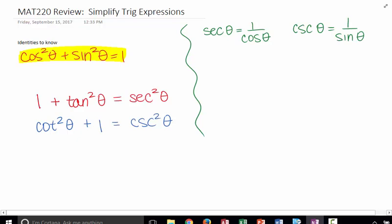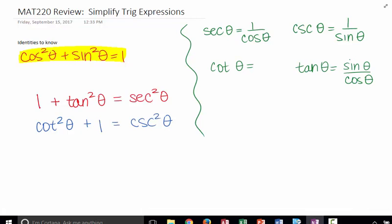And then the last two I would say we should recognize is cotangent of theta and tangent of theta. Now, most people know and remember tangent of theta is sine theta over cosine theta. But when I ask many of my students what is cotangent of theta, they just respond with, well, it's 1 divided by tangent of theta or the reciprocal of tangent.